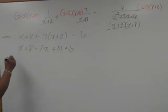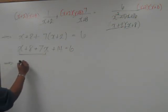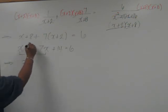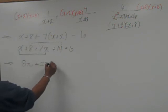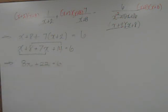Combining like terms, x plus 7x is 8x. 8 plus 14 is 22, all equal to 6.